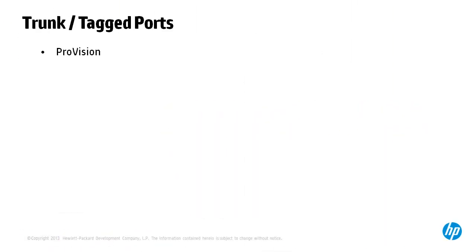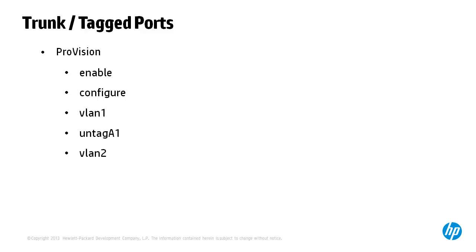To enable trunk or tag ports on an HP switch running the Provision operating system, you would type enable, configure, specify a VLAN — in this case VLAN 1 will be the untagged or native VLAN or PVID on port A1, so use the command 'untag A1'. You would then specify other VLANs such as VLAN 2 and 'tag A1', then VLAN 3 and tag that on port A1. For example, to permit VLAN 10 across port A1 you would type 'VLAN 10 tag A1'.